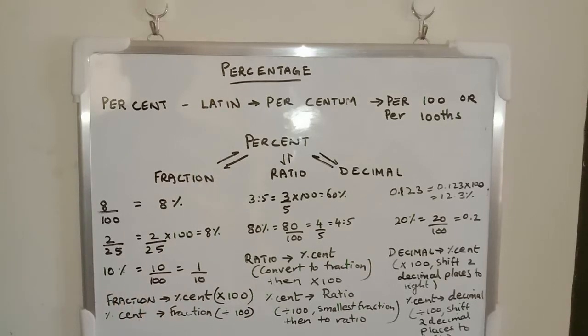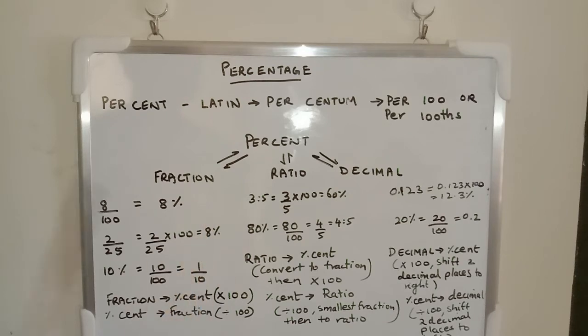Then, percent to fraction. We have 10% here. For that, we have to divide the percent by 100. So that would be 10/100, which equals 1/10.